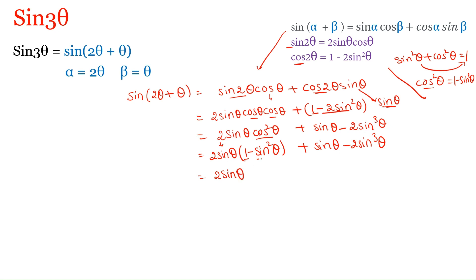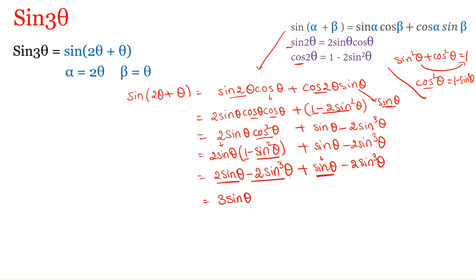2 sin θ × (−sin²θ) = −2 sin³θ. Adding the like terms: 2 sin θ + sin θ = 3 sin θ, and −2 sin³θ − 2 sin³θ = −4 sin³θ. So the final formula for sin 3θ is: sin 3θ = 3 sin θ − 4 sin³θ.